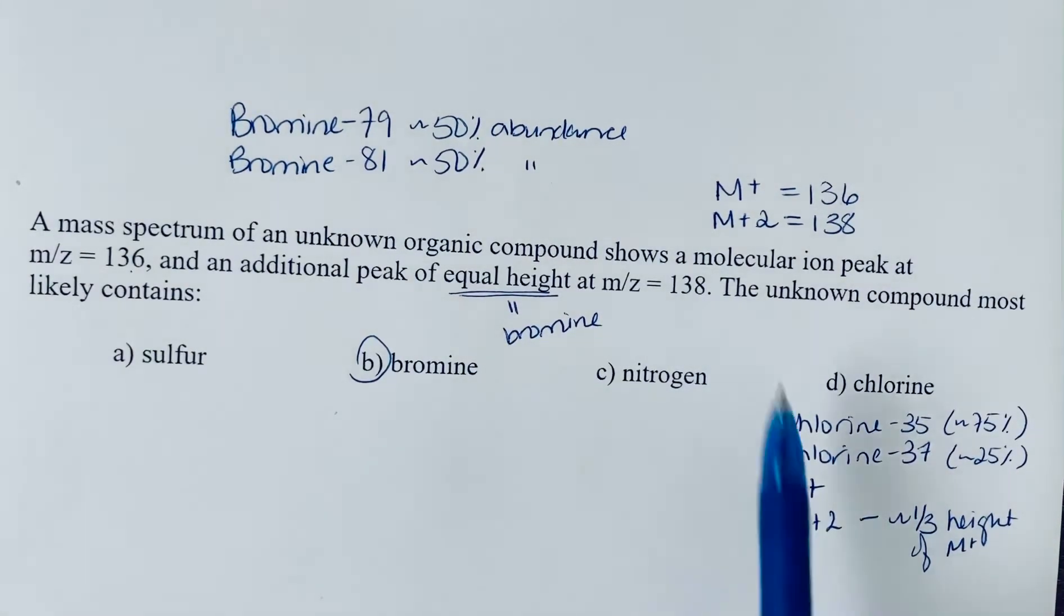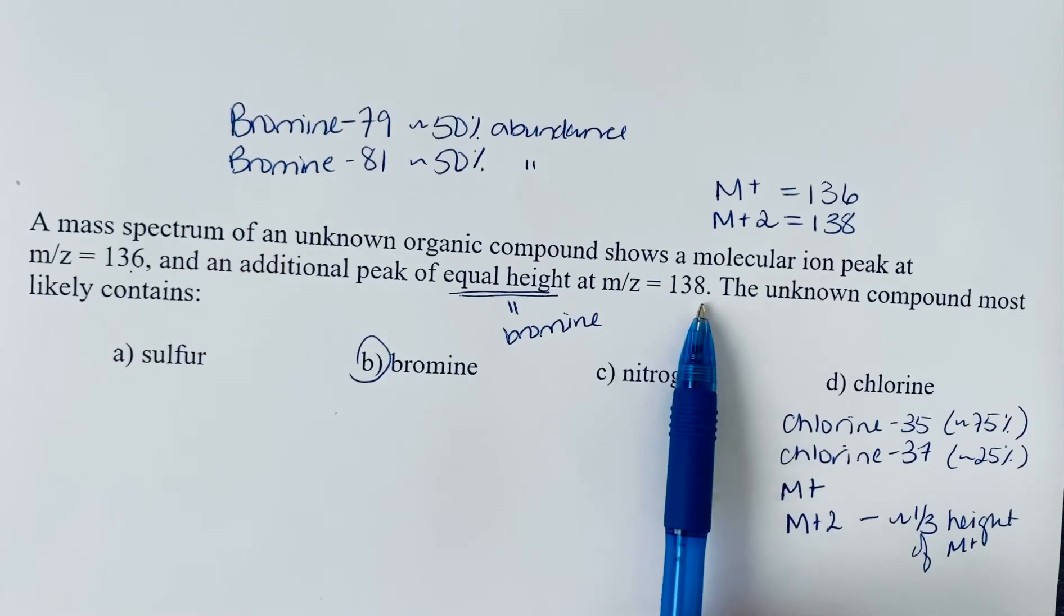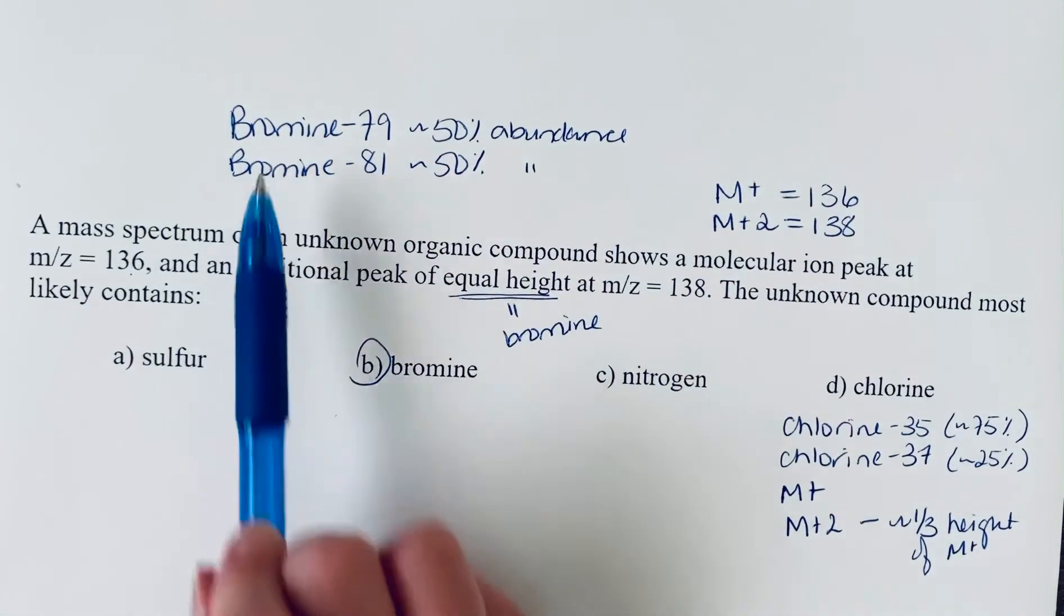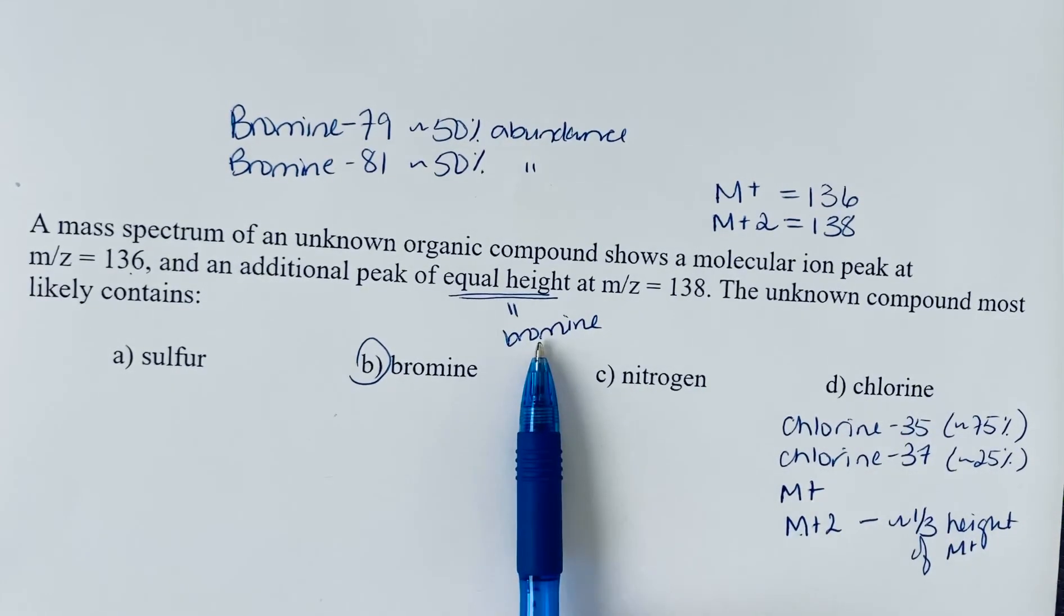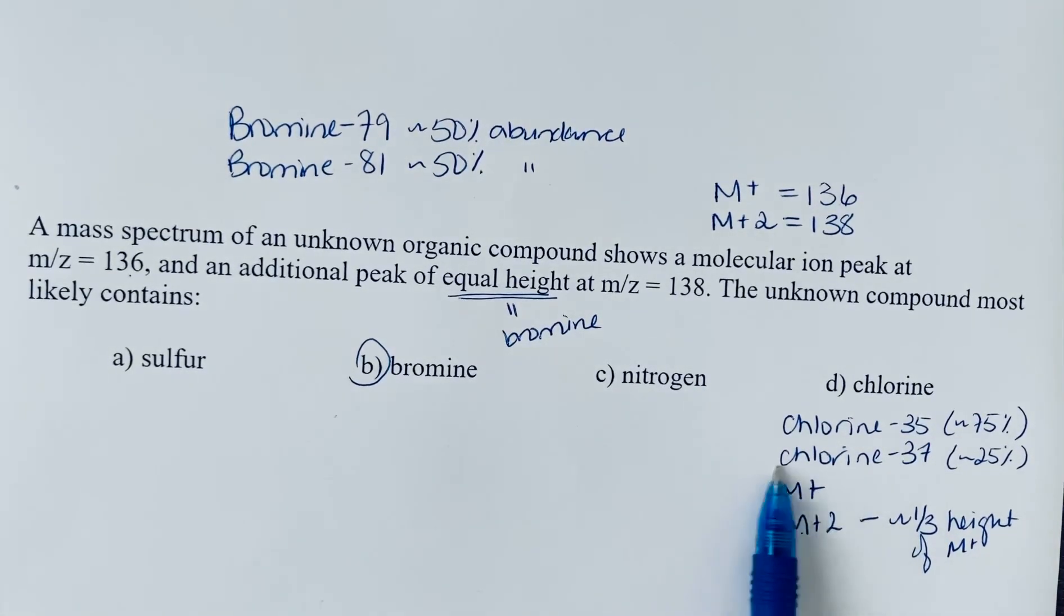The presence of a prominent M+2 peak tells us it's either bromine or chlorine. The ratio of peak heights allows us to distinguish between them. If they're equal height, it's bromine. If the heavier mass peak is about one-third the height, it's chlorine.